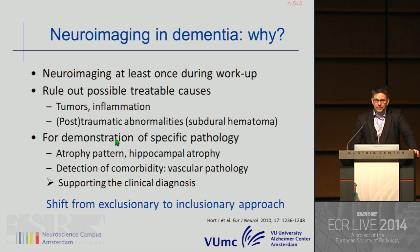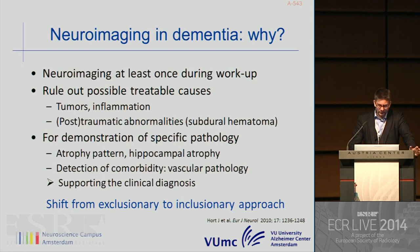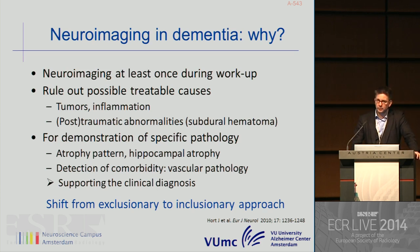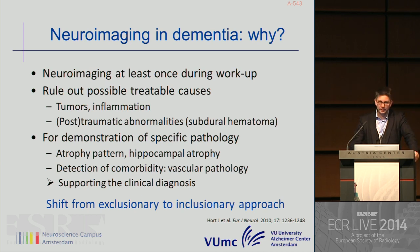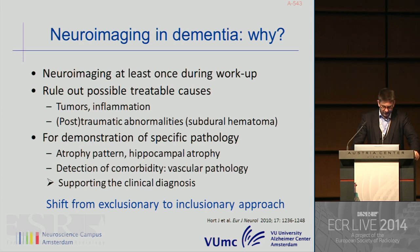Why use neuroimaging in dementia? Because dementia is primarily a clinical diagnosis, and the EFNS guidelines clearly state that neuroimaging should be performed at least once during the workup of memory clinic patients. In the first view, it's very important to rule out possible treatable causes of dementia, such as tumors, inflammations, or post-traumatic abnormalities. But these findings can only be observed in the minority of patients—